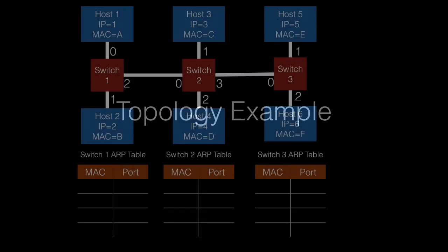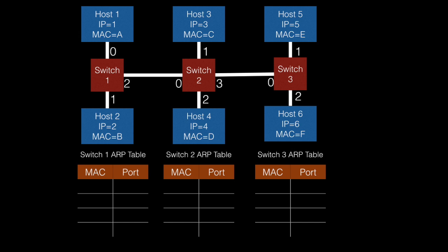Now that we understand how the ARP, Ethernet, and ICMP protocols are all interconnected with our ping application, we can look at a topology example. This example is a little more complicated than what was shown in the Udacity video, because with two switches it's hard to understand some of the nuances that occur as the ARP packets travel through the network. In this sample topology, we have six hosts spread across three different switches. The six hosts each have an IP address and MAC address, simplified to a single letter or number. Each switch has its various ports labeled between 0 and 3, and at the bottom you can see the ARP table for each switch. Since no data has been sent through the network yet, all of the ARP tables are empty.